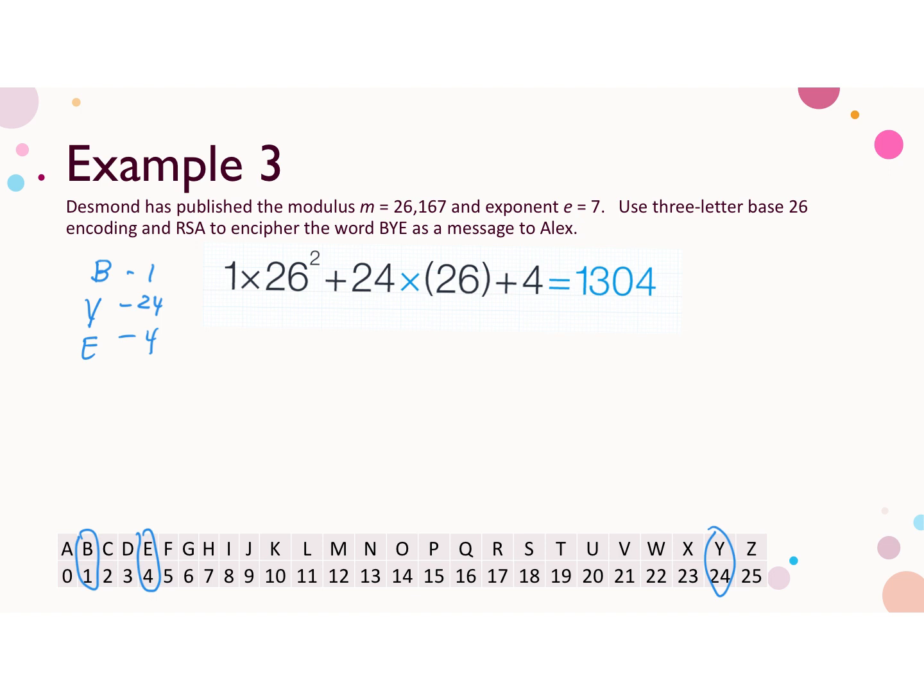So for 3 letter base 26 encoding, the highest power of 26 is going to be 26 squared. So the code for B is 1 times 26 squared. Code for Y is 24 times 26 plus the code for E is 4, and we add that on. So our base 26 encoding of the word BY is 1304.